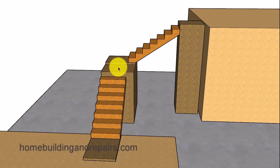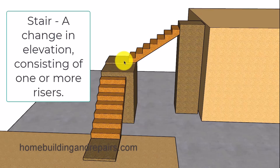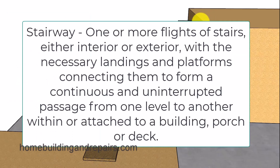Stairway: one or more flights of stairs. In this example, we would have a flight of stairs here, a flight of stairs here, and then individual stairs. The definition of stair is a change in elevation consisting of one or more risers. A stairway is one or more flights of stairs, either interior or exterior, with the necessary landings and platforms connecting them to form a continuous and uninterrupted passage from one level to another within or attached to a building, porch, or deck.